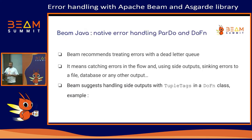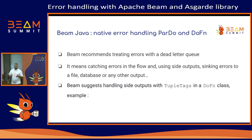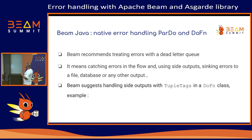Firstly, I'm going to show native error handling with ParDo and DoFn. Beam recommends treating errors with a dead letter queue — catching errors and doing a multi-sink. With side output, we can see good output and failures synced to a database, file, or topic. The system that allows this with DoFn classes is the tuple tag system.